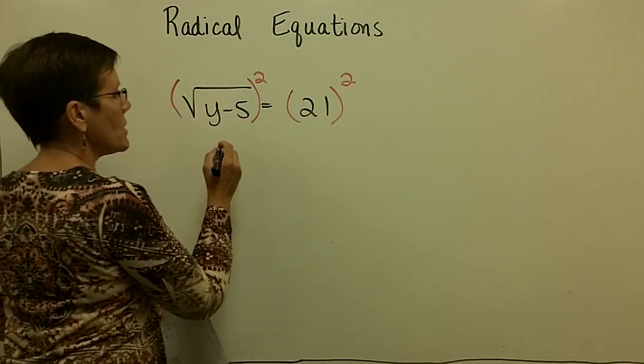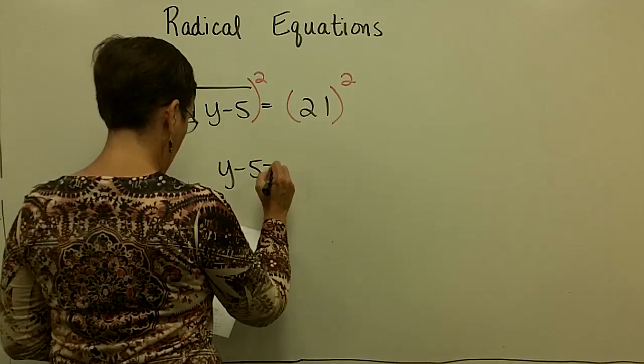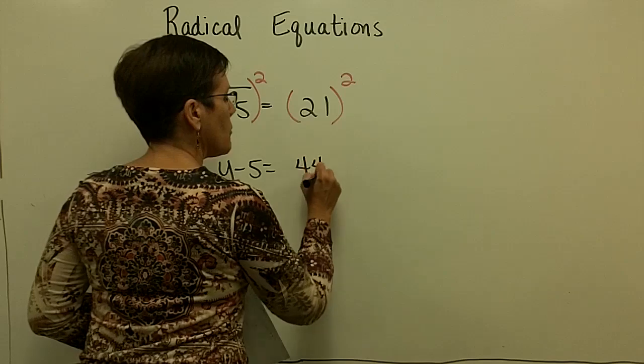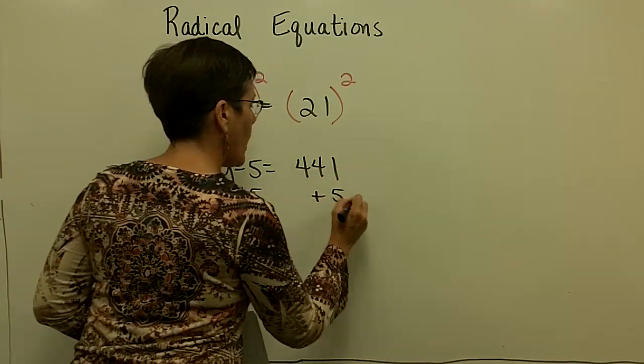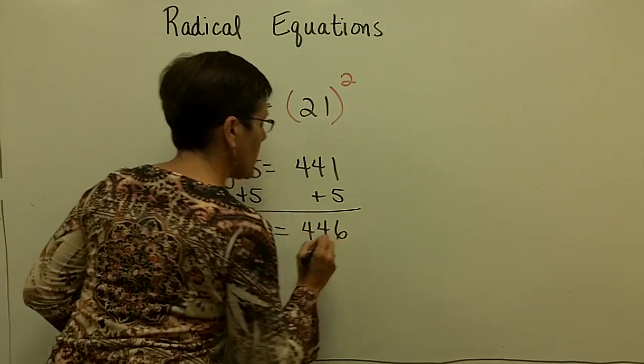So the square root of y minus 5, that quantity squared, is just y minus 5. And 21 squared is 441. And it's easy. Now I'm just going to add 5 to both sides. And I'll find my solution for y is 446.